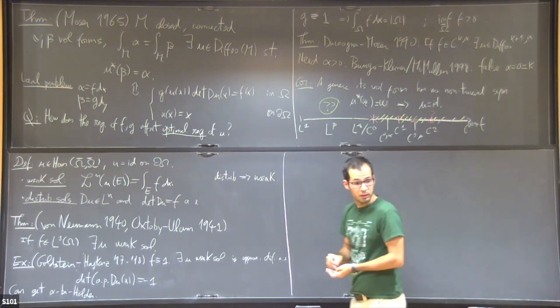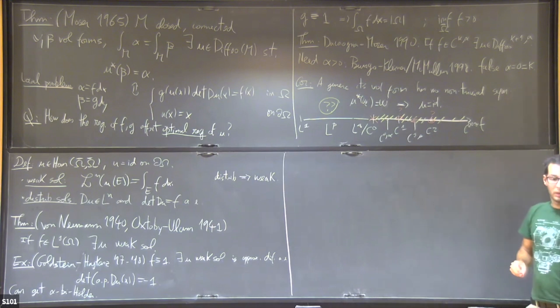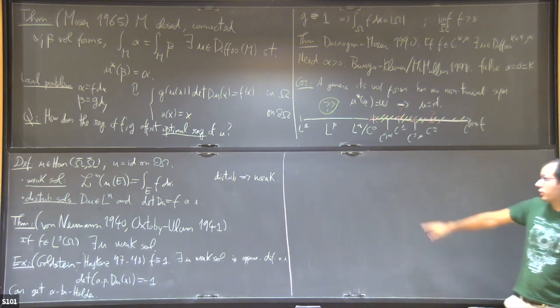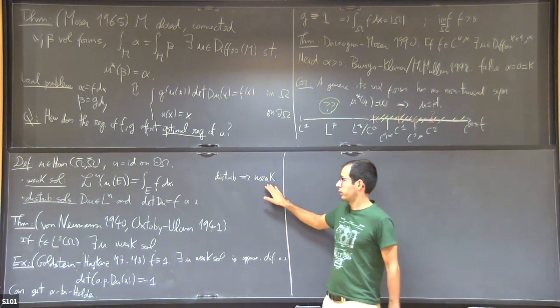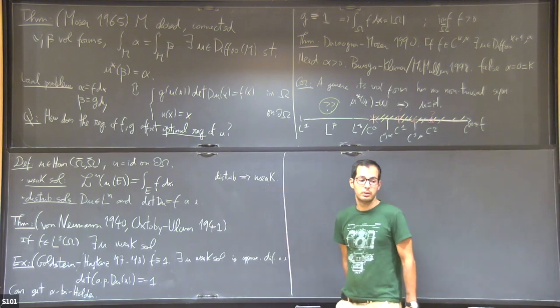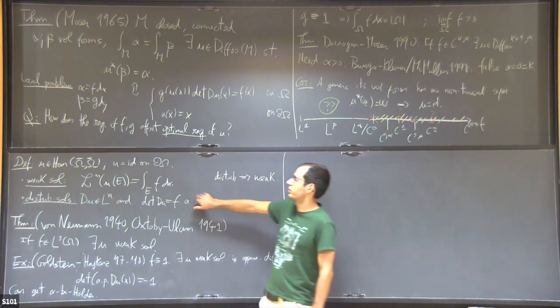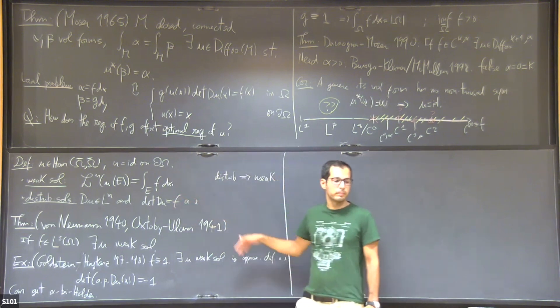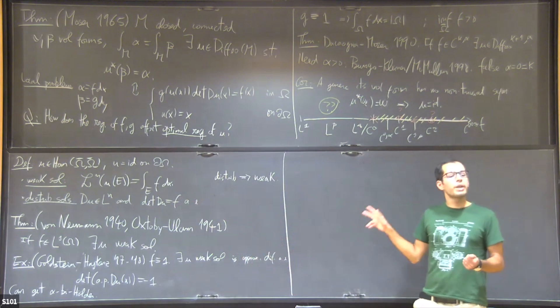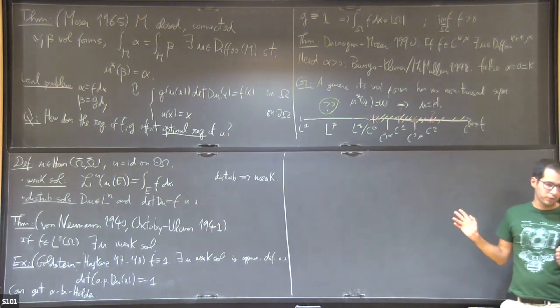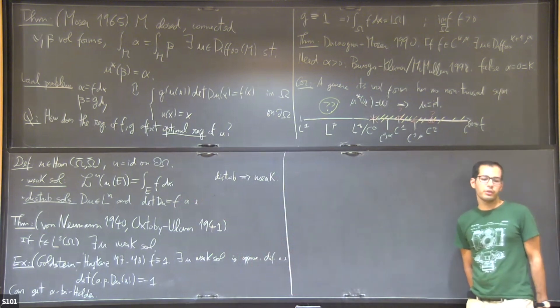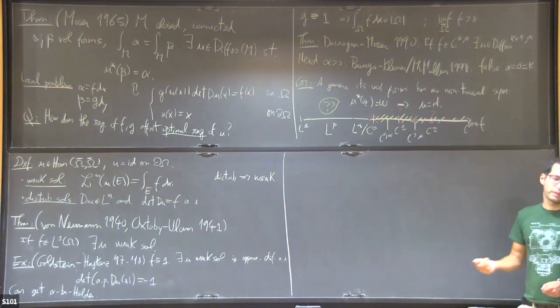For instance, in the planar case, when n is two, it follows by the beautiful results of Iwaniec and Sverak, that any distributional solution is necessarily a homeomorphism under our assumptions. These solutions are very well behaved. In general, the general statement here is that if DU is in L^{n,n-1}, this implies, under our assumptions, and it solves the PDE, it implies that U is a homeomorphism.